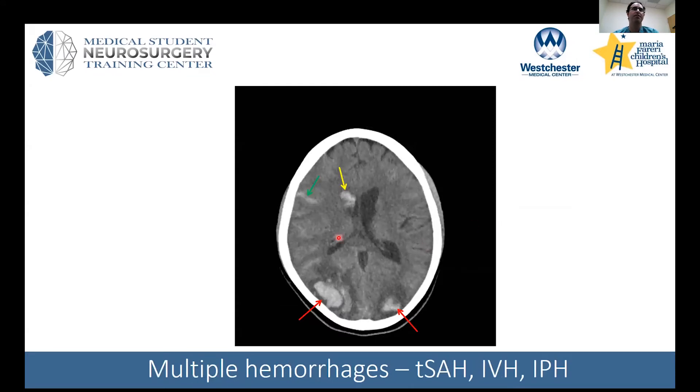This slide summarizes the different patterns of bleeding we've talked about: intraparenchymal hemorrhage, intraventricular hemorrhage, and traumatic subarachnoid hemorrhage.